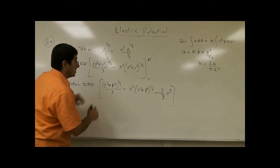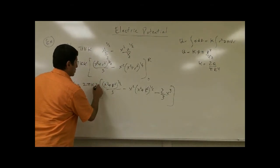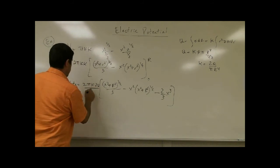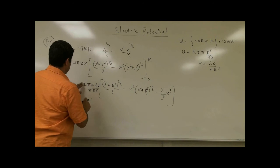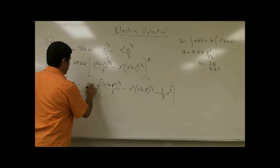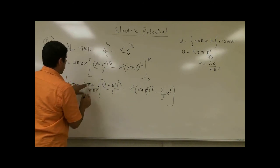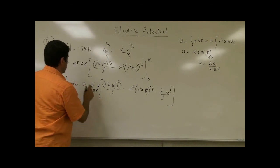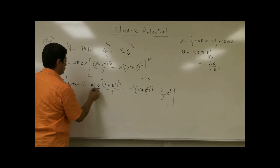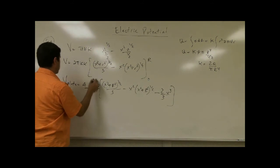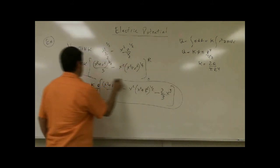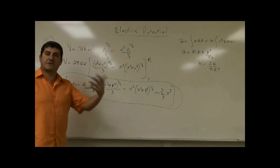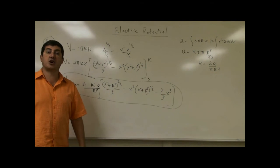I can find what kappa is, similar to what I did with the electric field. If q equals the integral of sigma dA equals kappa r squared times 2 pi r dr, that gives kappa times 2 pi R to the fourth over 4. So kappa equals 2q over pi R to the fourth. Substituting this in, the pi cancels and the final answer becomes 4kq over R to the fourth — times the geometric terms. This is the potential of the disc at any distance away, when the surface charge density increases as r squared.